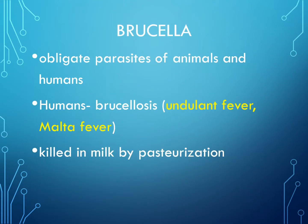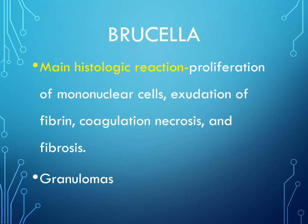Brucella are obligate parasites of animals and humans. The condition it produces is called brucellosis, otherwise known as undulant fever or Malta fever, and the organism is killed by pasteurization. The immunologic reaction involves proliferation of mononuclear cells, deposition of fibrin, coagulation necrosis, and fibrosis, with the presence of granulomas containing epithelioid and giant cells with central necrosis and peripheral fibrosis.